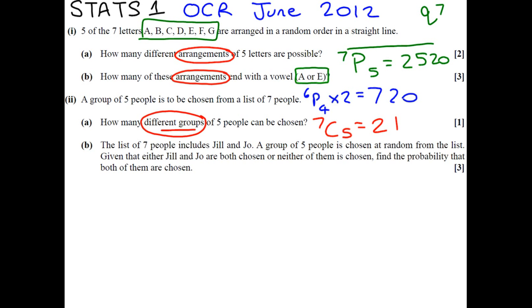Now for the trickier part of the question. It says that the list of 7 people includes Jill and Joe. So, Jill and Joe. So, a group of 5 people is to be chosen at random from the 7 people, which include Jill and Joe.